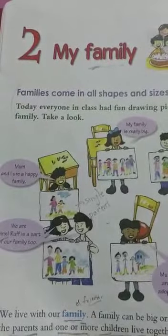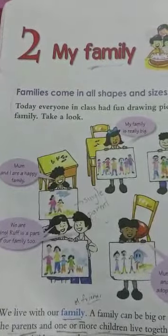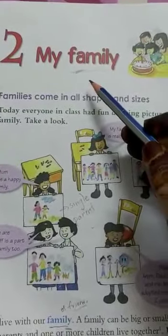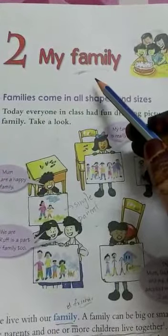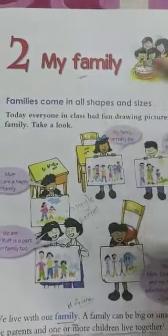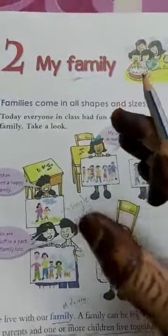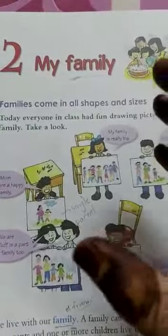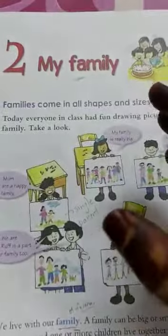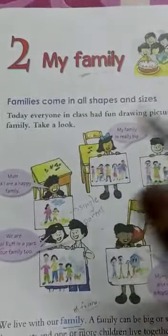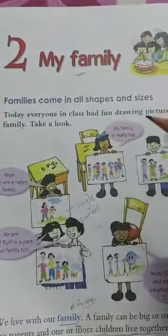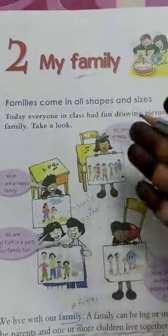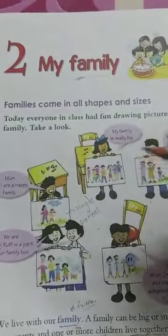We are going to look at just the main points. The second lesson we learned in the first grade was about 'My Family.' What is a family? A group of people like mother, father, brother, and sister who live together and love and care for each other a lot is called a family. Families come in all shapes and sizes.